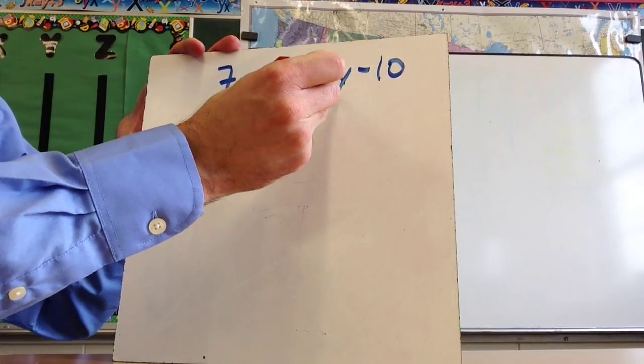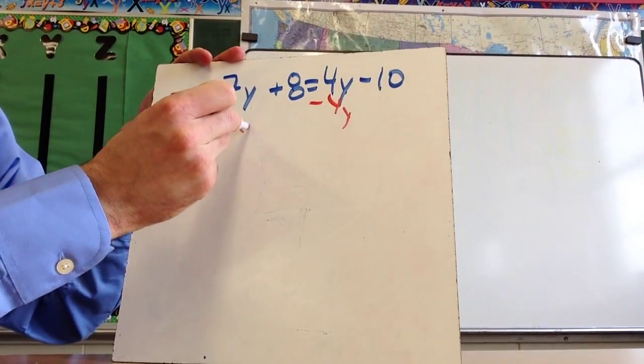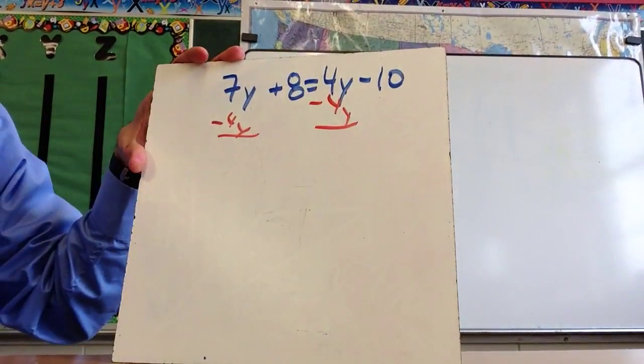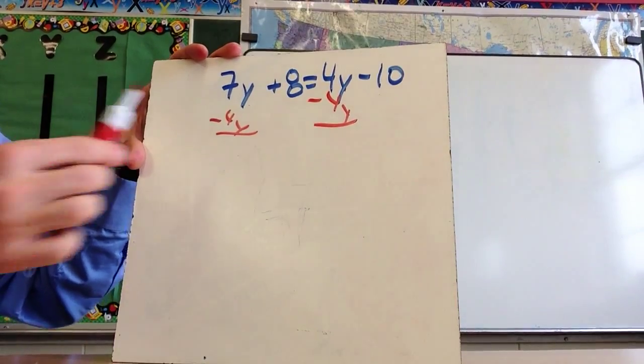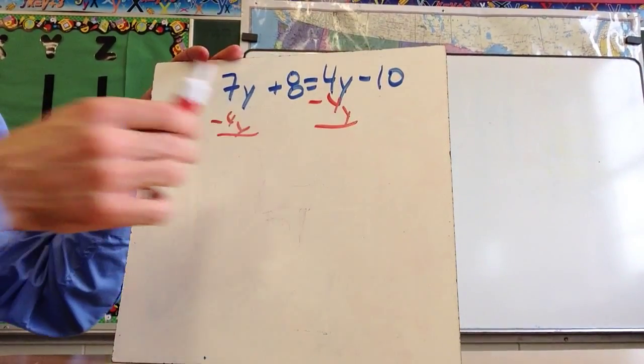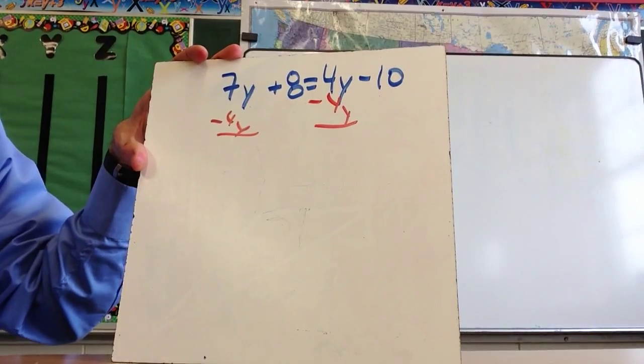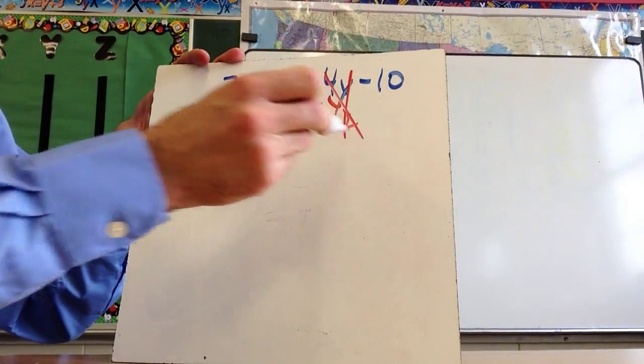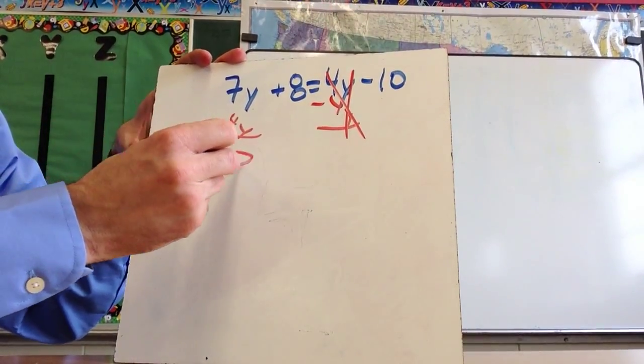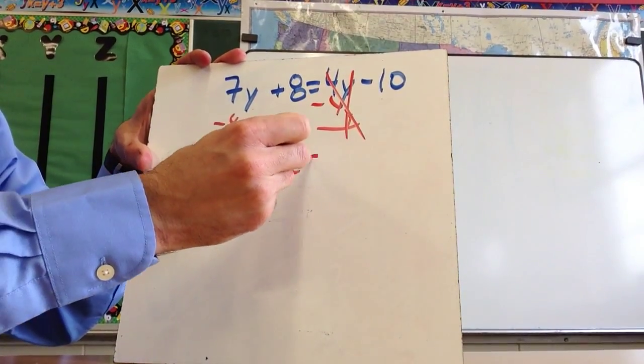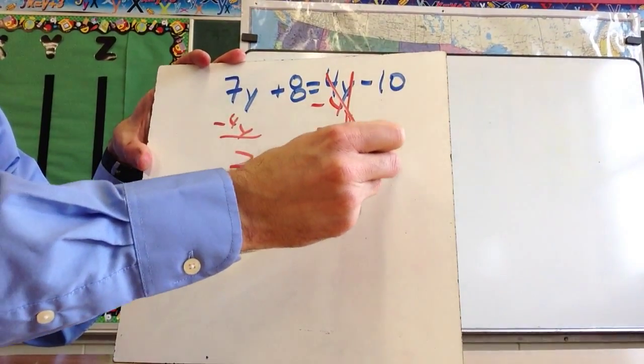So what I'm going to do is I'm going to subtract 4y from both sides. Now I typically deal with the variable first. However, some people in this particular problem would subtract 8 from both sides first, and that's fine. You'll see that we end up getting the same thing. So this is going to cancel out. I'm left with 3y, don't forget about this 8 that's still there, equals negative 10.